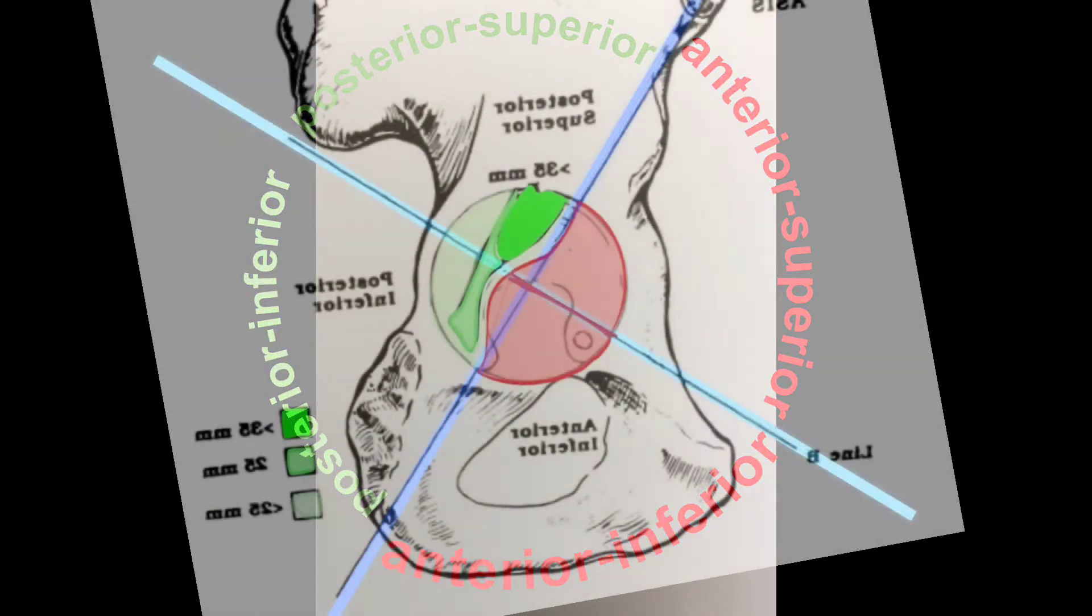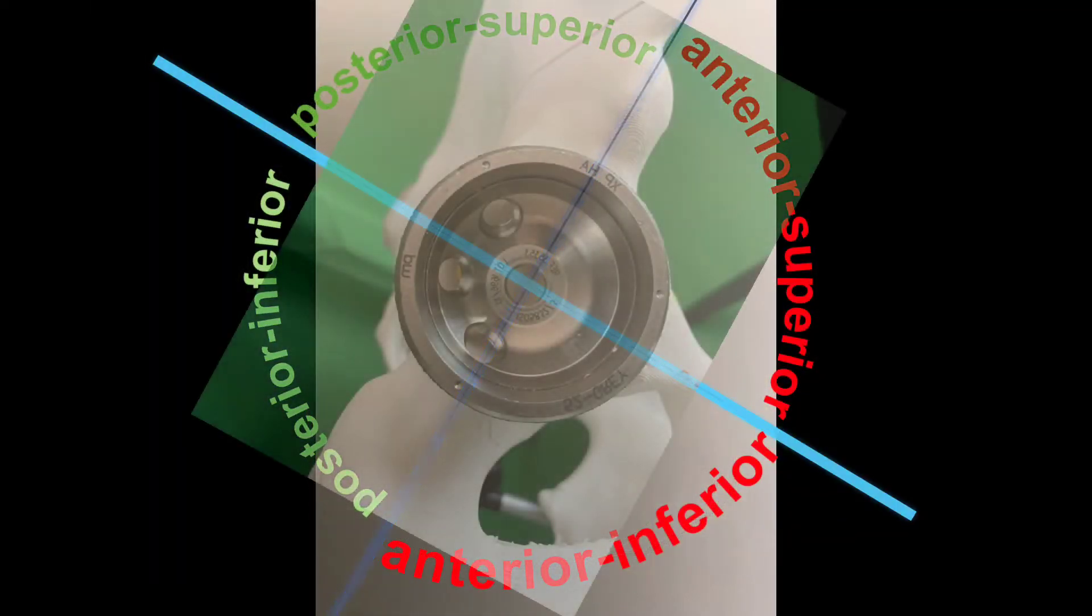When only one screw is used to anchor the cup, the surgeon can adjust the position of the required screw hole intraoperatively by rotating the cup to allow purchase into deeper bone stock and avoid injury to neurovascular structures.